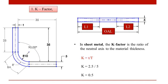The k-factor is defined as the ratio of the neutral axis distance to the material thickness. The distance from the inside face to the neutral axis, divided by the total thickness, gives the k-factor. The general k-factor value at the center line is 0.5, which means the thickness is divided by 2 — giving a value of 0.5 maximum.